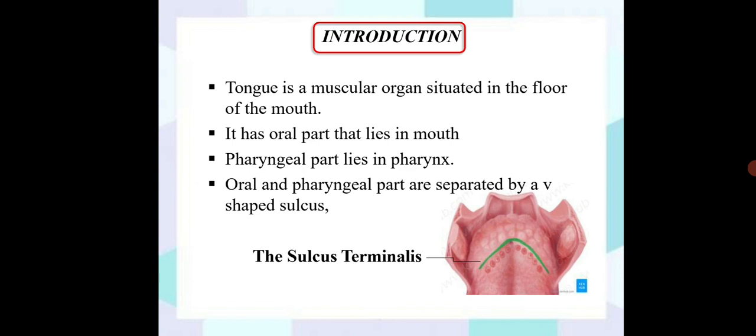First we will start with the introduction. Tongue is a muscular organ which is situated in the floor of the mouth. It has specific two parts: first part that is oral part, and next one that is the pharyngeal part.